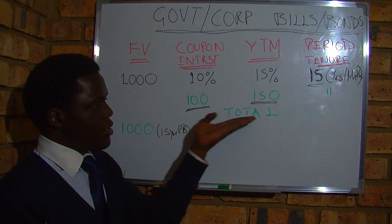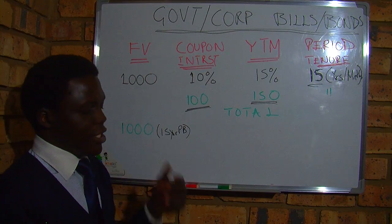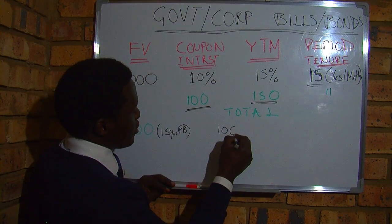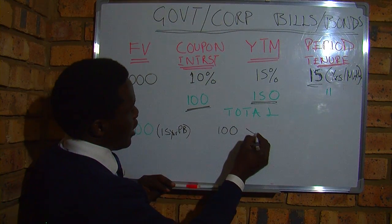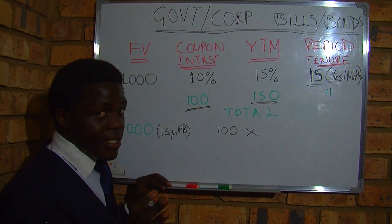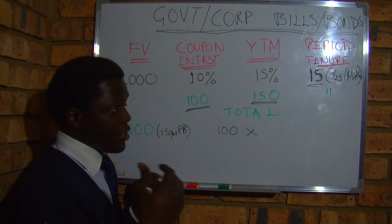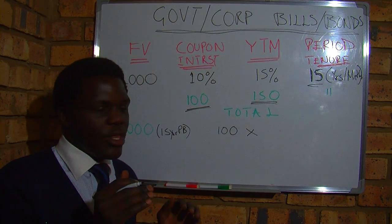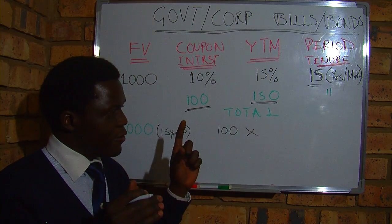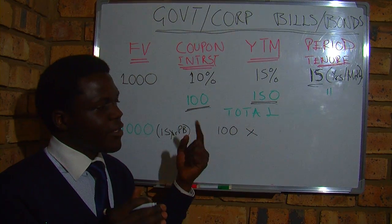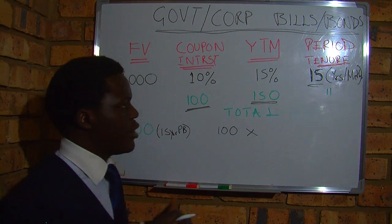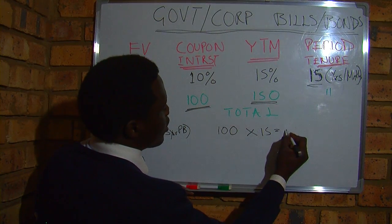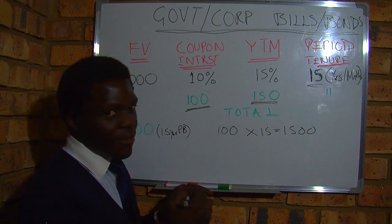Let's do some totals on our interest. We're going to have one hundred — which is our annual interest — times fifteen years. Some governments pay every six months, so you'd get 50 after six months and another 50 after the next six months, coming to 100 per year. So it's one hundred times fifteen years, giving us one thousand five hundred.